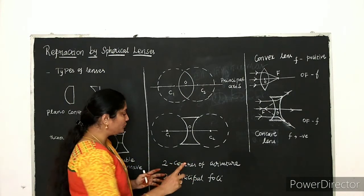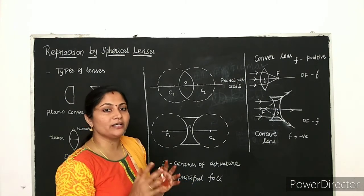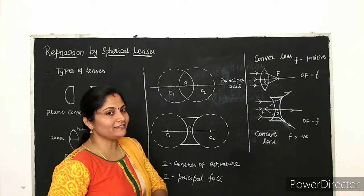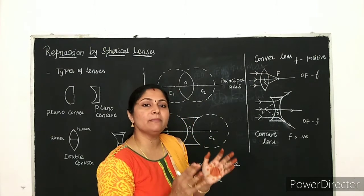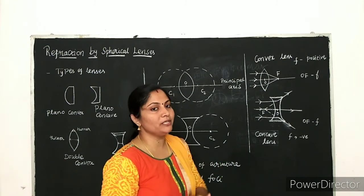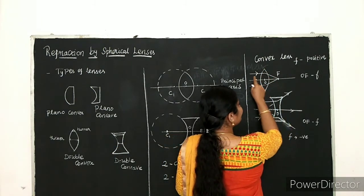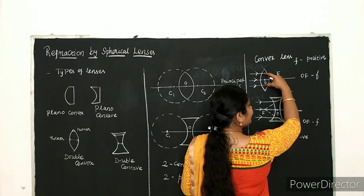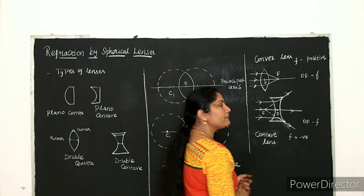Two centers of curvature and two principal foci will be there. The principal focus — when a parallel beam of light is incident on a convex lens, all those parallel rays converge at a particular point after refraction. That particular point is said to be the principal focus. If light travels from the left, it converges on the right side.